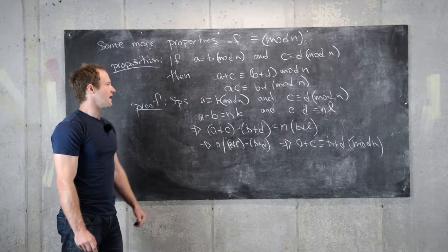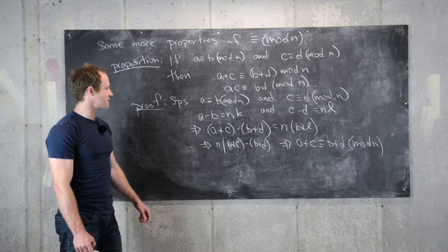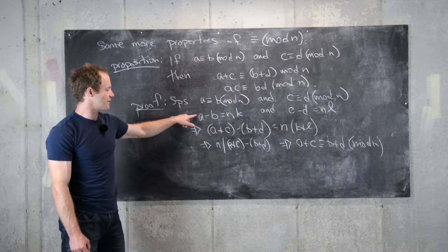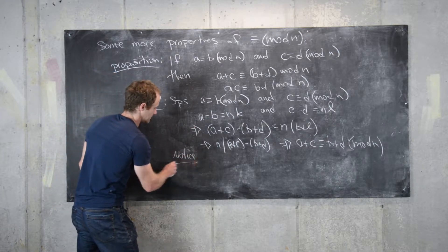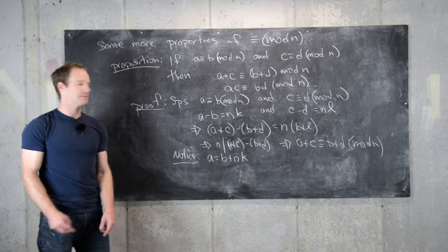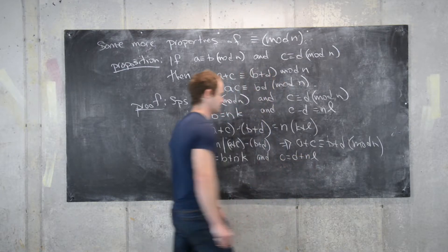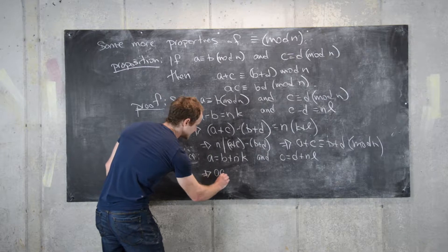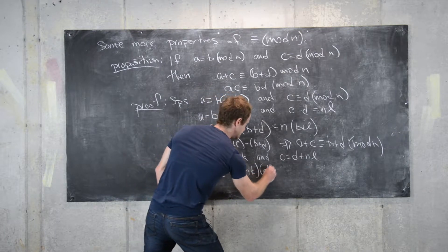Now let's think about the multiplication case. We want to get a times c and b times d. We'll rewrite the equations slightly: a is equal to b plus nk, and c is equal to d plus nl. Now we can multiply these two equations, giving us ac equals b plus nk times d plus nl.